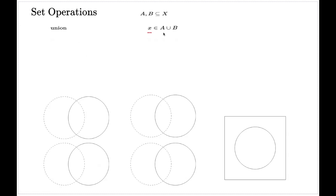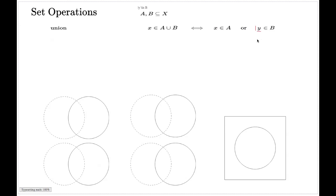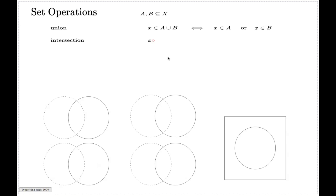An element x belongs to the union of A and B if and only if x belongs to A or x belongs to B. Another set operation which you have to know is the intersection of sets.